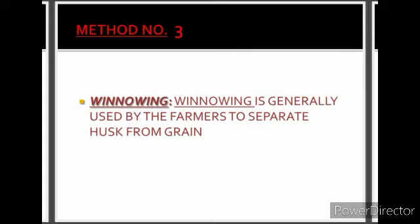The next process is winnowing. It is generally used by farmers to separate husk from grain. It is somewhat similar to threshing — in threshing, grains are separated from stalks, whereas in winnowing, grains are separated from husk, the unwanted white material that is not needed by farmers or by us.